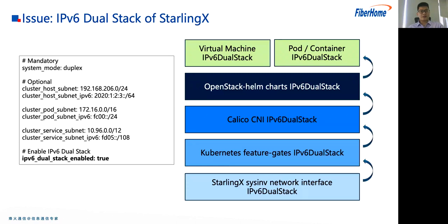The next issue we encountered was IPv6 dual stack. In the current transition from IPv4 to IPv6, customers such as operators have increasingly urgent demands for IPv6 dual stack. However, the current StarlingX community support for IPv6 is insufficient and basically does not support dual stack. We focused on this feature, starting from configuring StarlingX SysInv network configuration, enabling IPv6 dual stack feature gates in Kubernetes, configuring Calico dual stack, modifying relevant OpenStack Helm charts to configure OpenStack dual stack, and finally enabling virtual machines and pod containers to obtain both IPv6 and IPv4 addresses.